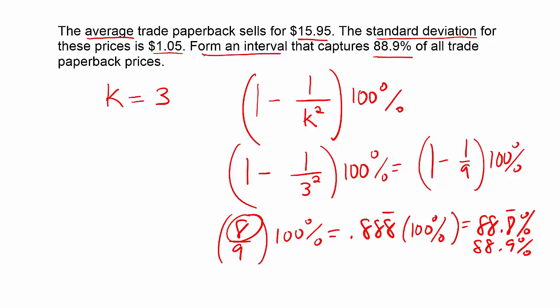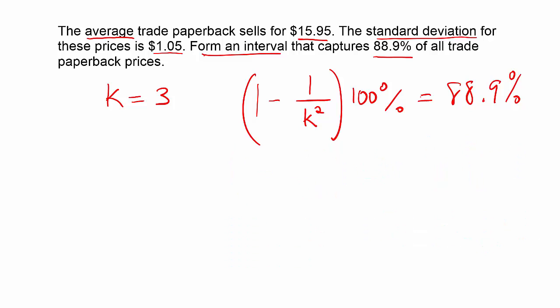So hopefully you would have remembered that, or you could have just used trial and error to get something close to it. Or, as a last resort, you could solve an equation to solve for it. You could set this equal to 88.9% in the beginning and then you could solve for k. That would be a little bit more work, but it's still doable. So notice the goal here was find k.